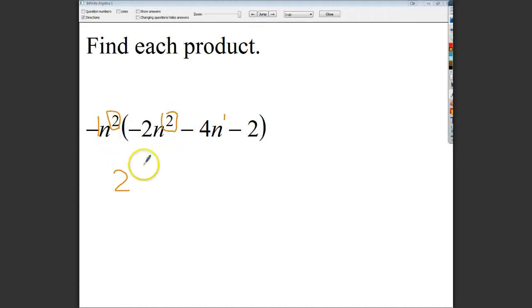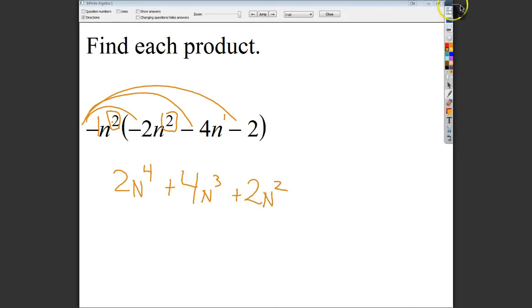into the fourth power. And then I do negative 1 times negative 4, and get positive 4, 2 plus 1 is 3, so it's n to the third. And then finally, negative 1 times negative 2 gives you plus 2, and there's only that n squared term to finish off that set.